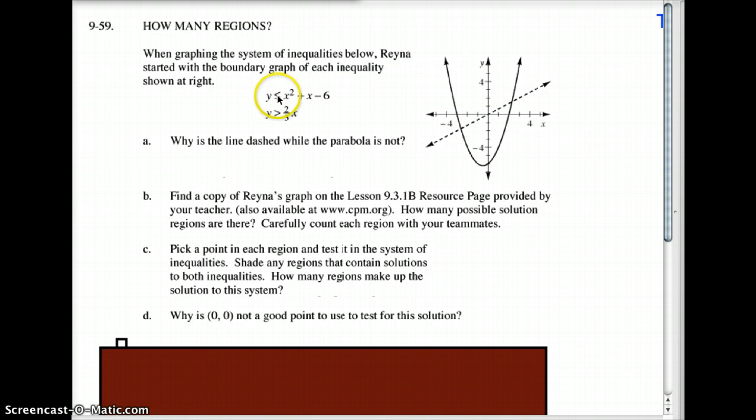I'm assuming you've paused and graphed it. The first one, y is less than x squared, so it's everything shaded below the parabola. It covers all these areas but doesn't cover these two inside areas. The second one, y is greater than two-thirds x, means we shade above the line. So our solution set would be over here and over here.